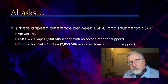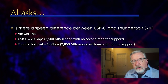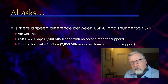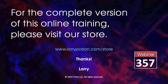Also, Thunderbolt is optimized for large files — the kind of files that we use in media editing. USB-C is optimized for small files like Word documents and Excel files. So if you're involved in media and you have the choice, Thunderbolt 3 and Thunderbolt 4 are a much higher performance connection protocol than USB-C.